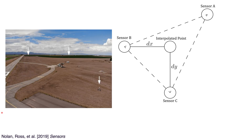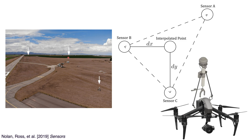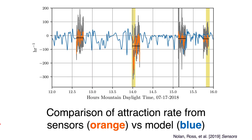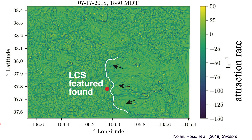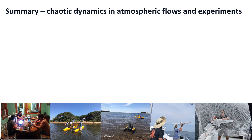We're showing an aerial view of the three assets — a drone, a fixed tower, and another drone — all equipped with weather stations measuring the two components of horizontal wind. We measured the attracting rate using those three velocity measurements to compute a gradient, then compared that with a high-fidelity Weather Research and Forecasting model shown in blue. We have pretty good agreement, and it seems we were able to pick up the LCS feature found near our sensor site.